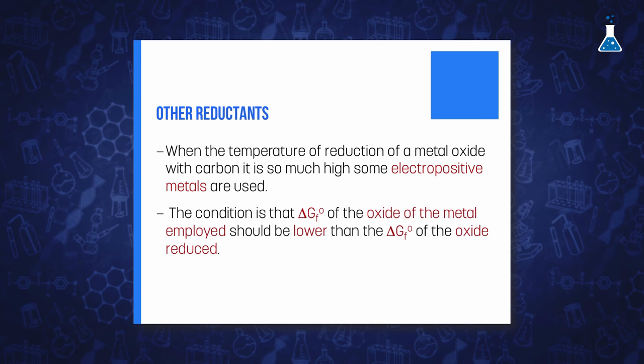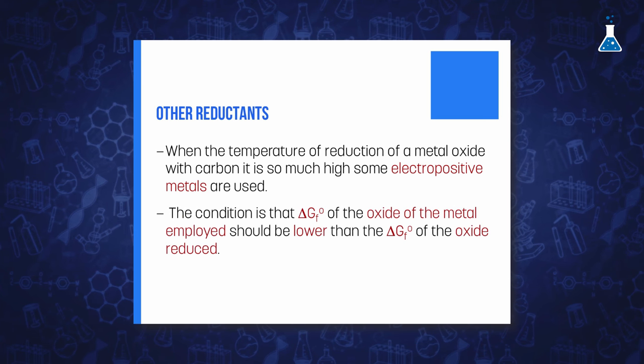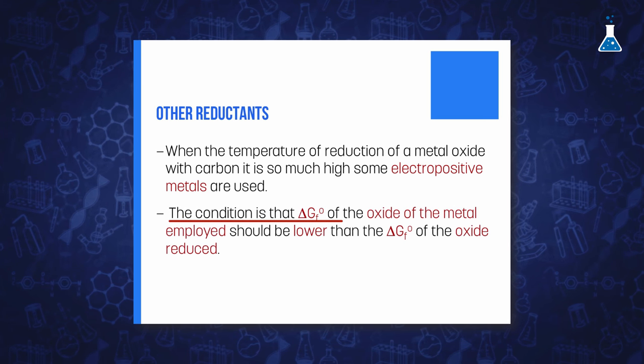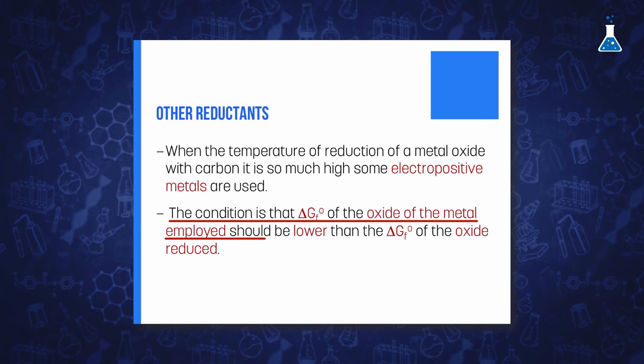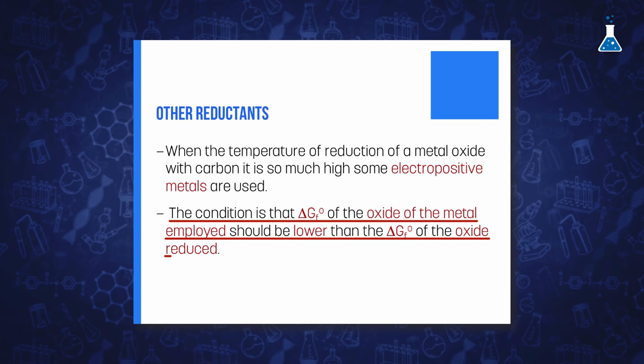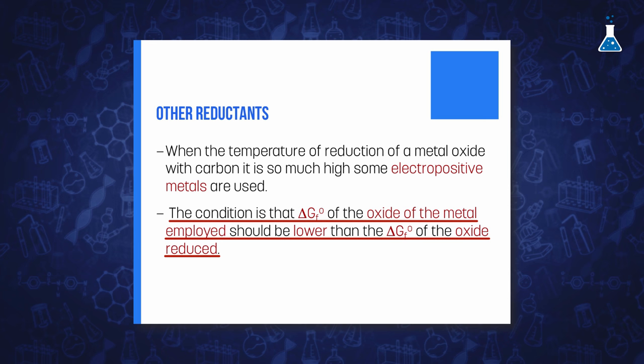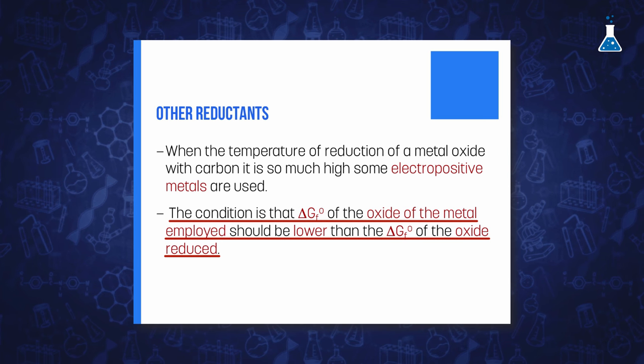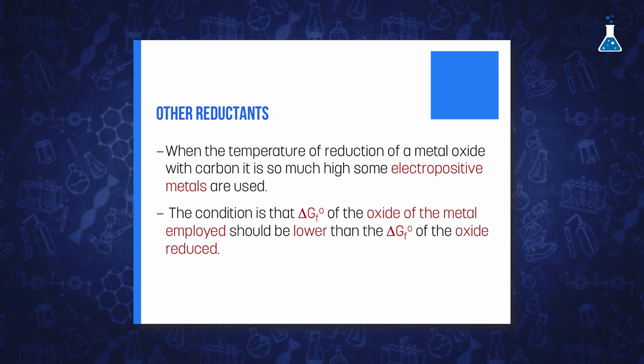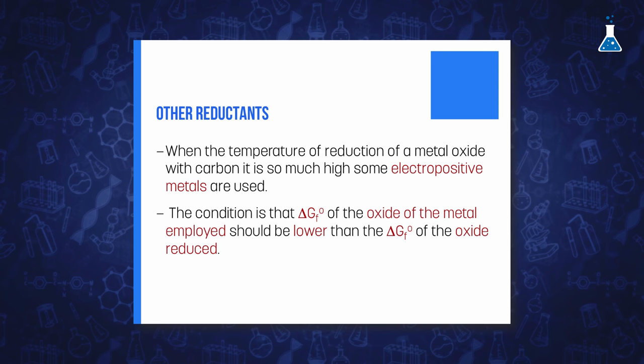However, any metal can be used as a reducing agent as long as the energy of the formation of its oxide is more negative than the energy of the oxide of the element to be reduced. That can be easily illustrated in the Ellingham diagram so that any metal will reduce the oxide of another metal whose line of formation is above in the Ellingham diagram.